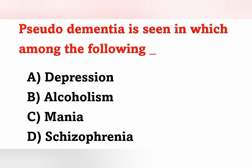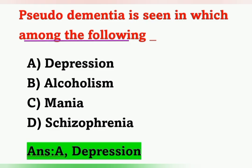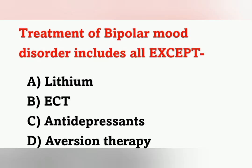Next question: Pseudodementia is seen in which of the following? Options: A) Depression, B) Alcoholism, C) Mania, D) Schizophrenia. Pseudodementia means false dementia, or dementia-like symptoms. It is seen in depression. Option A is the correct answer.